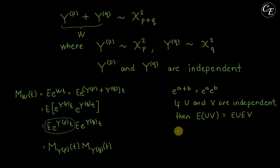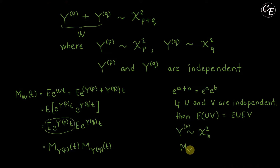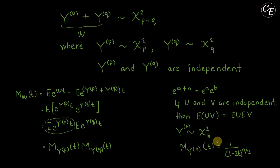Let us consider an arbitrary random variable Y which has a chi-squared distribution with n degrees of freedom. From several references, the moment generating function for a chi-squared random variable with n degrees of freedom is equal to 1 over (1 minus 2t) raised to n over 2, where n is the degrees of freedom. If you want a proof or derivation of this moment generating function, I have a video for that and I provided the link in the description below.